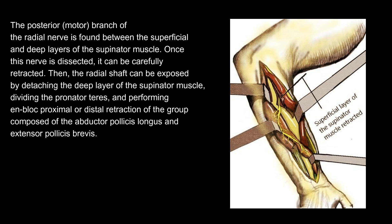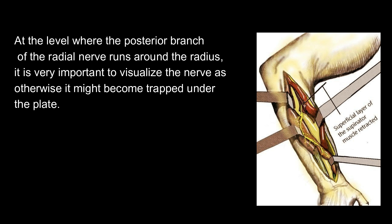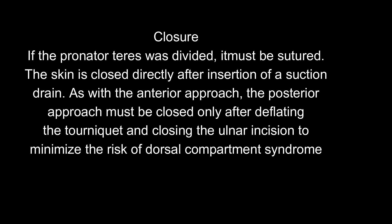The radial shaft can be exposed by detaching the deep layer of the supinator muscle, dividing the pronator teres, and performing en-bloc proximal or distal retraction of the group composed of the abductor pollicis longus and extensor pollicis brevis. At the level where the posterior branch of the radial nerve runs around the radius, it is very important to visualize the nerve as otherwise it might become trapped under the plate. Closure: if the pronator teres was divided, it must be sutured. The skin is closed directly after insertion of a suction drain. As with the anterior approach, the posterior approach must be closed only after deflating the tourniquet and closing the ulnar incision to minimize the risk of dorsal compartment syndrome.